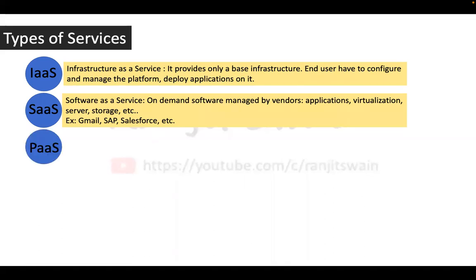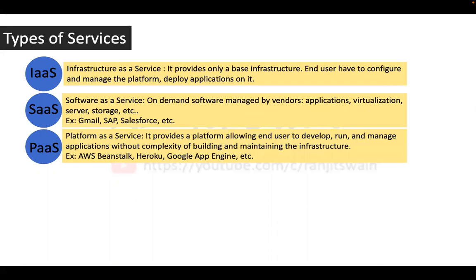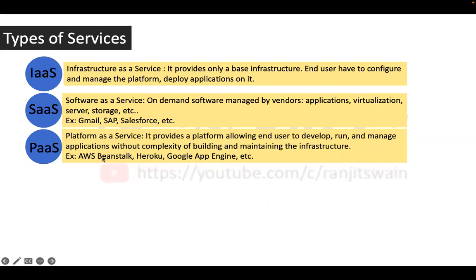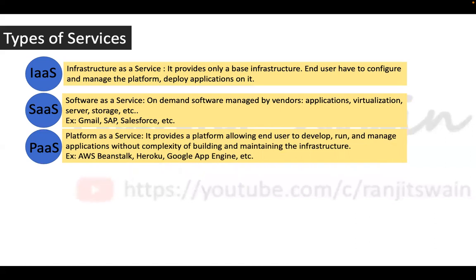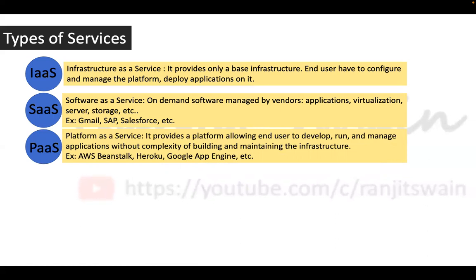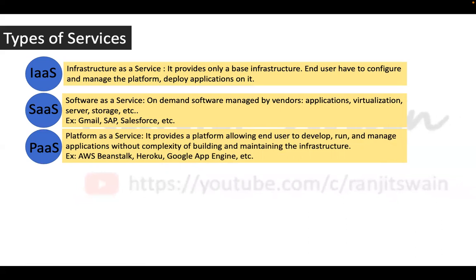The next is PaaS — Platform as a Service. It provides a platform allowing end users to develop, run, and manage applications without the complexity of building and maintaining the infrastructure. The difference from IaaS: with IaaS they give you just a skeleton, just infrastructure, and you set up everything — networks, platforms, all of it. With PaaS, all infrastructure is already provided, and you only need to focus on development.